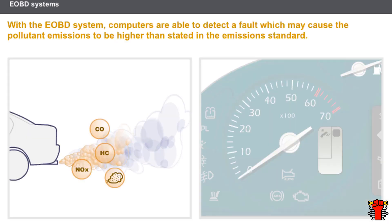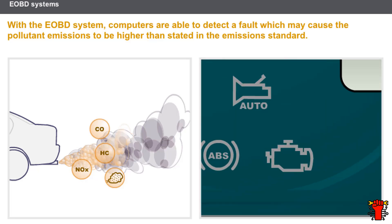Diesel vehicles complying with EURO 3 emissions standards are equipped with EOBD on-board diagnostic systems. With this system, computers are able to detect a fault which may cause the pollutant emissions to be higher than stated in the emissions standard. If a fault of this sort is detected, the computer switches on a specific warning light on the instrument panel, known as the MIL or EOBD warning light.